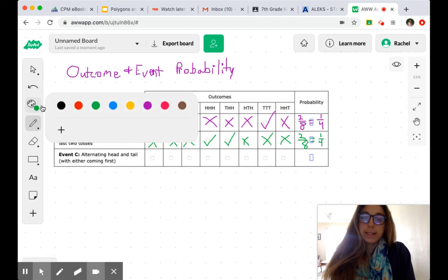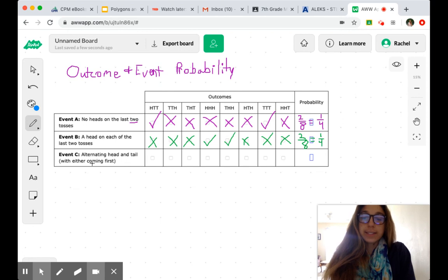And then last but not least, event C, alternating head and tail. And either one can go first. So we just can't have two of the same letter next to each other in any of our possibilities. So this one will work out. And we've got a couple more no's. Then we have another one that alternates. And some more no's. And then once again, this is like our number of the day, we have two eighths.